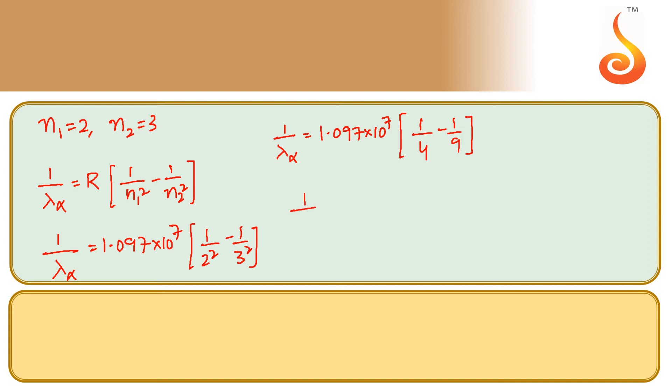By simplifying it, 1 by lambda alpha is equal to 1.097 into 10 power 7. The common denominator is 36, so 9 minus 4 which is 5 by 36.